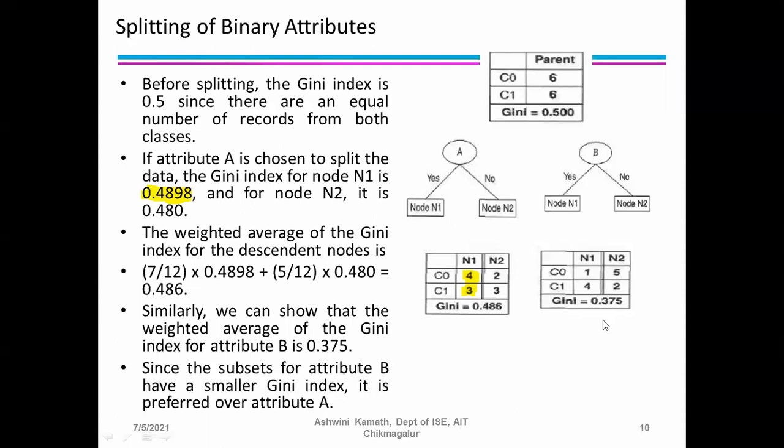Since the subsets for attribute B have a smaller Gini index of 0.375 compared to attribute A's 0.486, attribute B is preferred over attribute A. Lesser the impurity, the better the attribute — we select attribute B as the splitting condition.